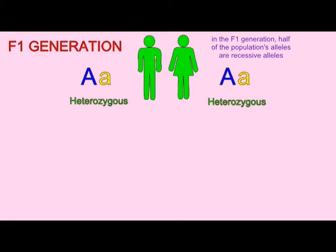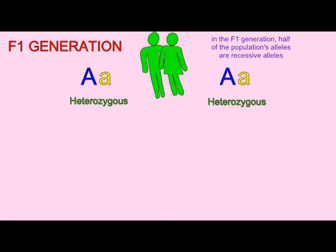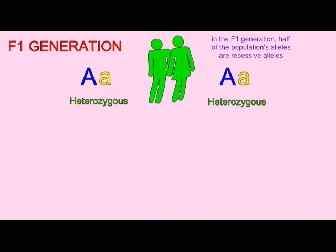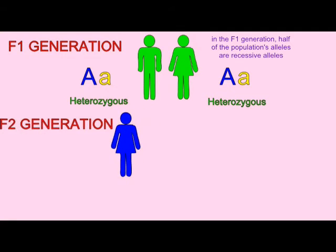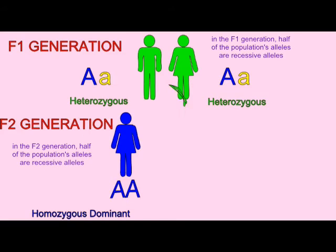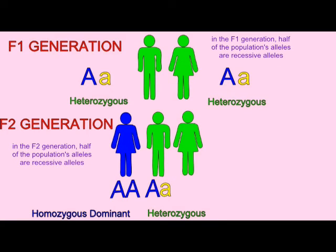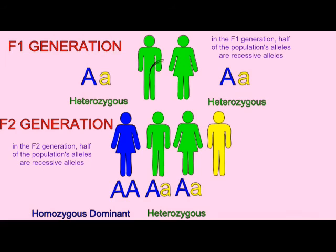Each individual possesses one of their two alleles as recessive. In the F2 generation, a quarter of the population is homozygous recessive and half of the population is heterozygous, so half of the alleles in the population are once again the recessive alleles. In these three generations there are differing numbers of individuals who possess the recessive phenotype, but the percentage of alleles in the population which are recessive has remained the same.